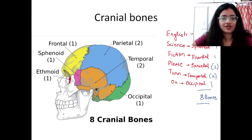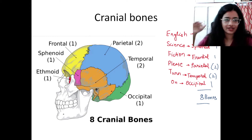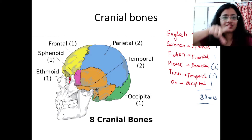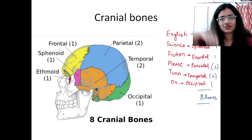The cranial bones are: ethmoid, sphenoid, frontal, parietal, temporal, and occipital. There are only two bones which are paired and the rest are unpaired, giving us eight cranial bones total.